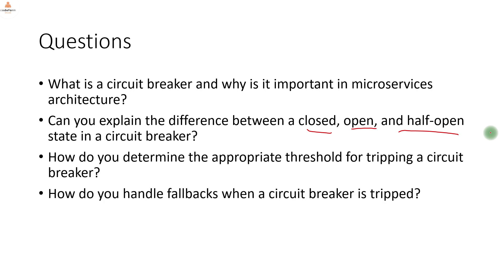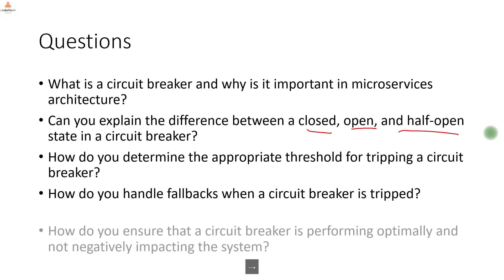How do you handle fallbacks when a circuit breaker is tripped? There are three main cases: return a cached value, return an exception, or return some other default response. For example, if a fraud check service is failing, you could call an alternate fraud check service. Based on the business use case, you decide how to respond when the circuit breaker is tripped.